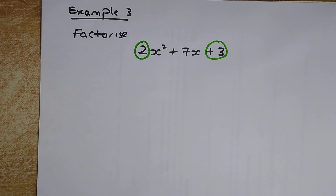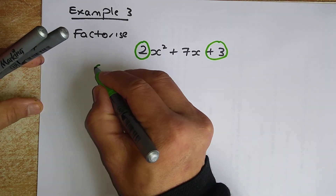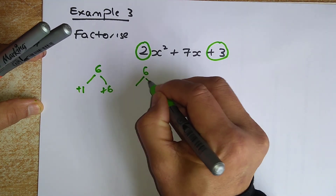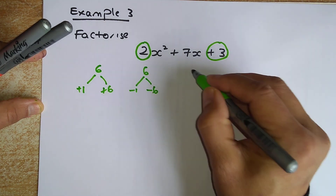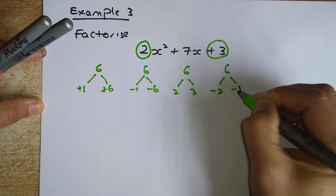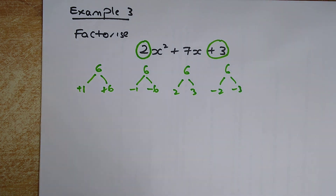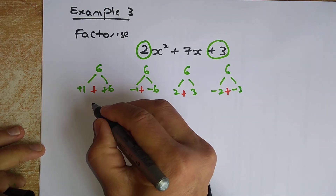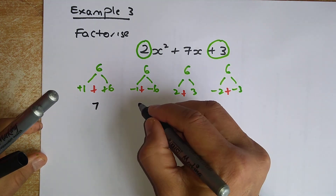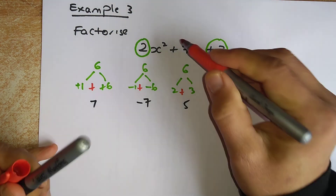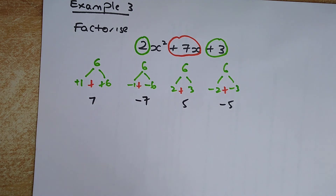There are four possible factor pairs for 6: plus 1 and plus 6; minus 1 and minus 6; plus 2 and plus 3; or minus 2 and minus 3. Adding each pair: 1 plus 6 is 7; minus 1 plus minus 6 is minus 7; 2 plus 3 is 5; minus 2 plus minus 3 is minus 5. The middle number is plus 7x, so the correct pair is plus 1 and plus 6.